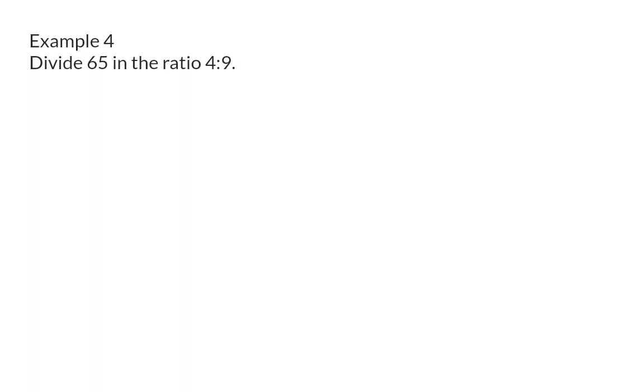Example 4. Divide 65 in the ratio 4 to 9. In example 3, we received the ratio as well as one of the actual values for a side in the ratio. This time, we once again receive the ratio, but we also receive the total value for both sides of the ratio.